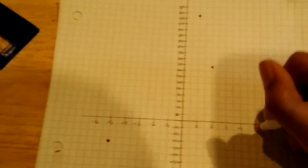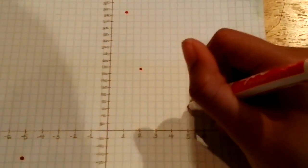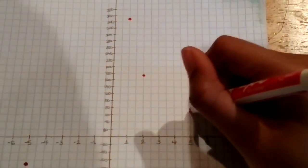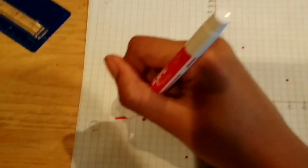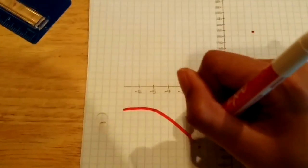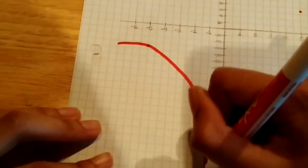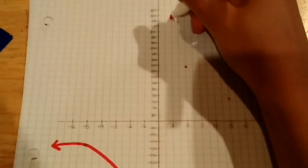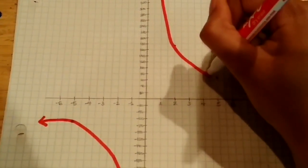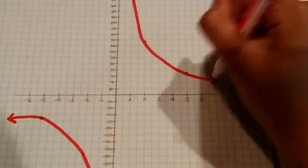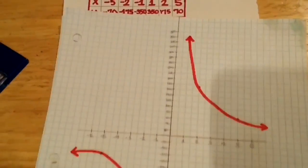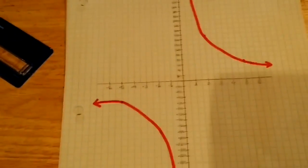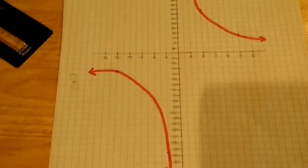And the last one is at 5, 70. So you go over 5 and up to 70. Then you connect the dots. And that's the graph for inverse variation.